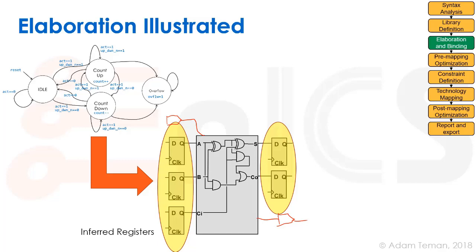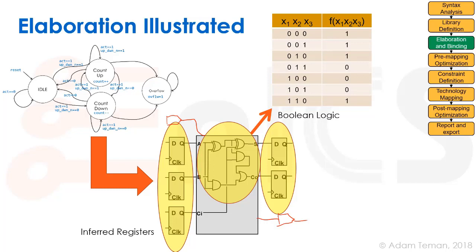At all the assign statements and always-at-star statements, it knew how to put combinational bubbles in the middle. The combinational bubbles are actually just Boolean logic — truth tables with a whole bunch of variables. The variables are the outputs of each of the inferred registers, the inputs to the design, and the outputs (the Fs), which go into output registers or endpoint registers, and the outputs from the design. Now we have this Boolean logic, and what we're going to discuss is optimization of the Boolean logic. The first stage is what we call two-level logic.